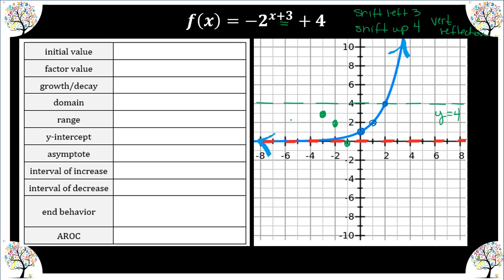Let's identify our y-intercept — plug in zero for x. 2^(0+3) = 2^3 = 8, times negative one is negative 8, plus 4 gives us negative 4. So our y-intercept is (0, -4).